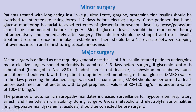In such circumstances, self-monitored blood glucose (SMBG) should be performed at least before each meal and at bedtime, with target pre-prandial values of 80 to 120 mg/dL. The presence of autonomic neuropathy mandates increased surveillance for hypotension, respiratory arrest, and hemodynamic instability during surgery. Gross metabolic and electrolyte abnormalities like hyponatremia, dyskalemia, and acidosis should be corrected before surgery.